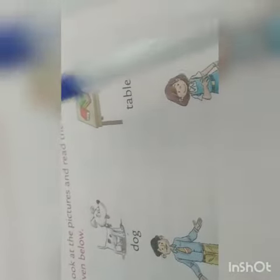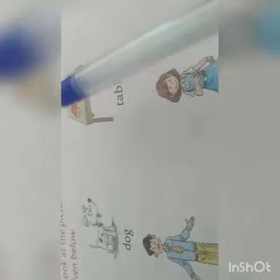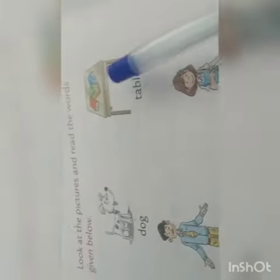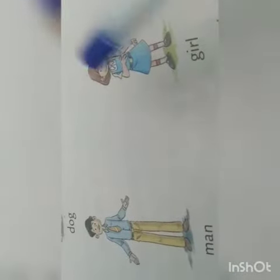So let's see. Here is a dog. Dog kya hai? Dog is an animal. Okay, table kya hai? What is a table? Table — it is a thing. Yaani vastu hai. Man kya hai? It's a person. Girl kya hai? Yeh bhi person hai.